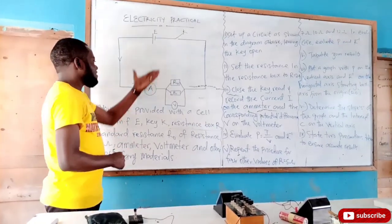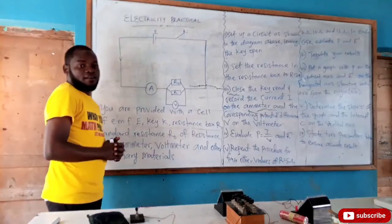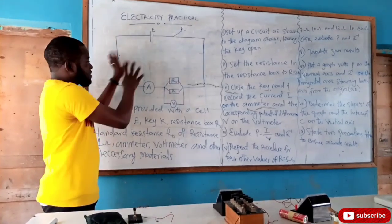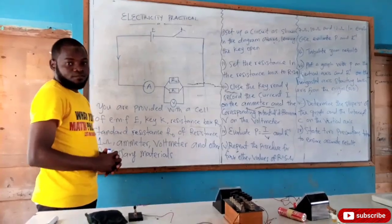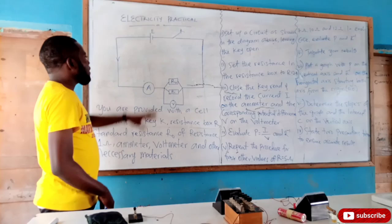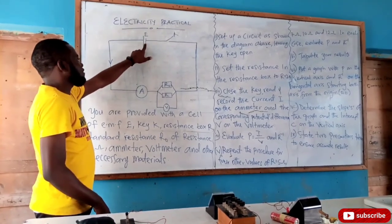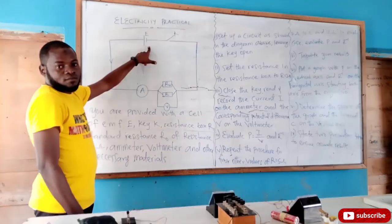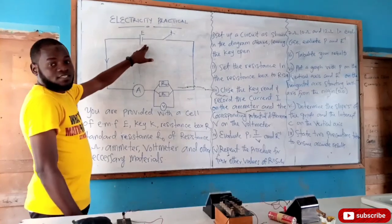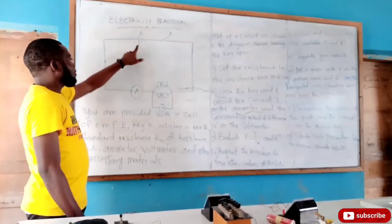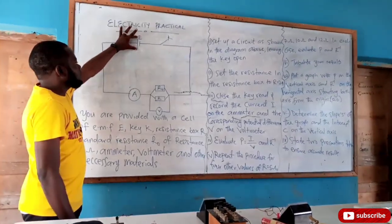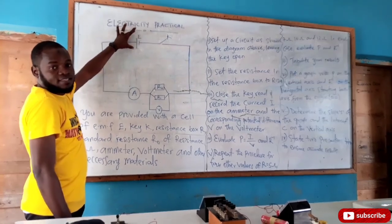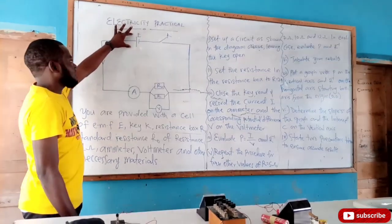Now this is the physics diagram. Before I go into the question, I would like to explain everything in this diagram in detail. When you see this symbol, this represents a cell — just a single cell. How will you know? Once one pole is longer than the other, it simply means a cell.